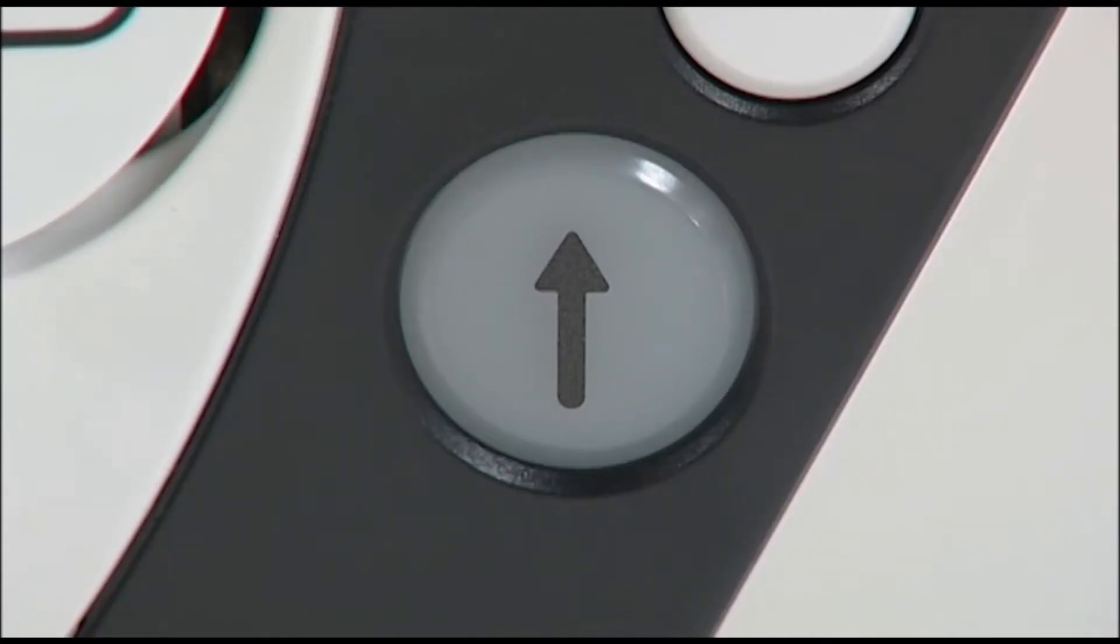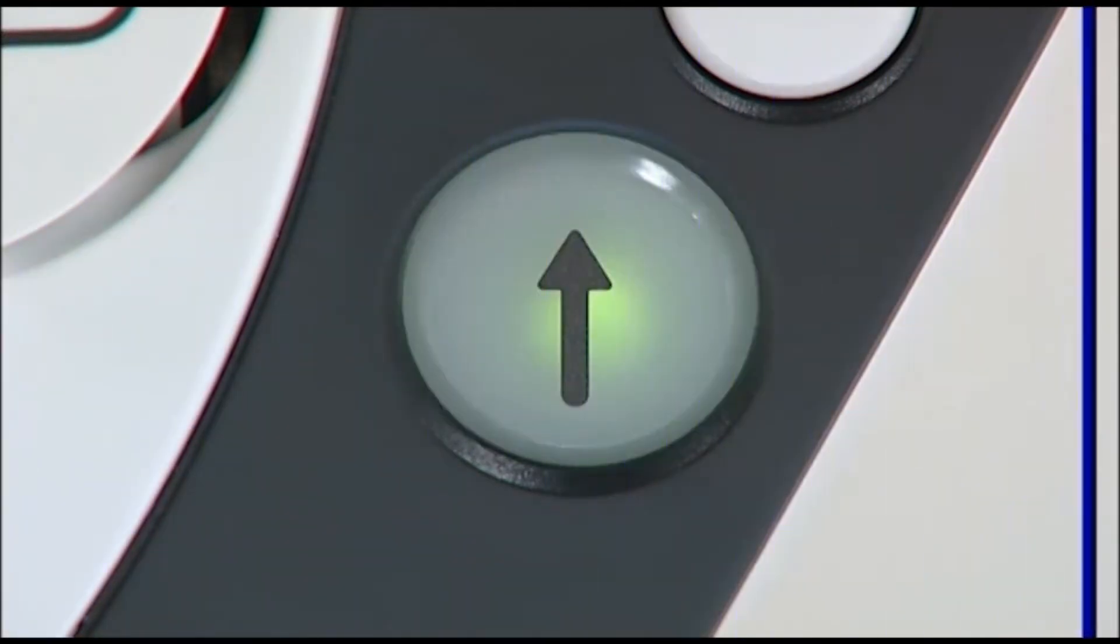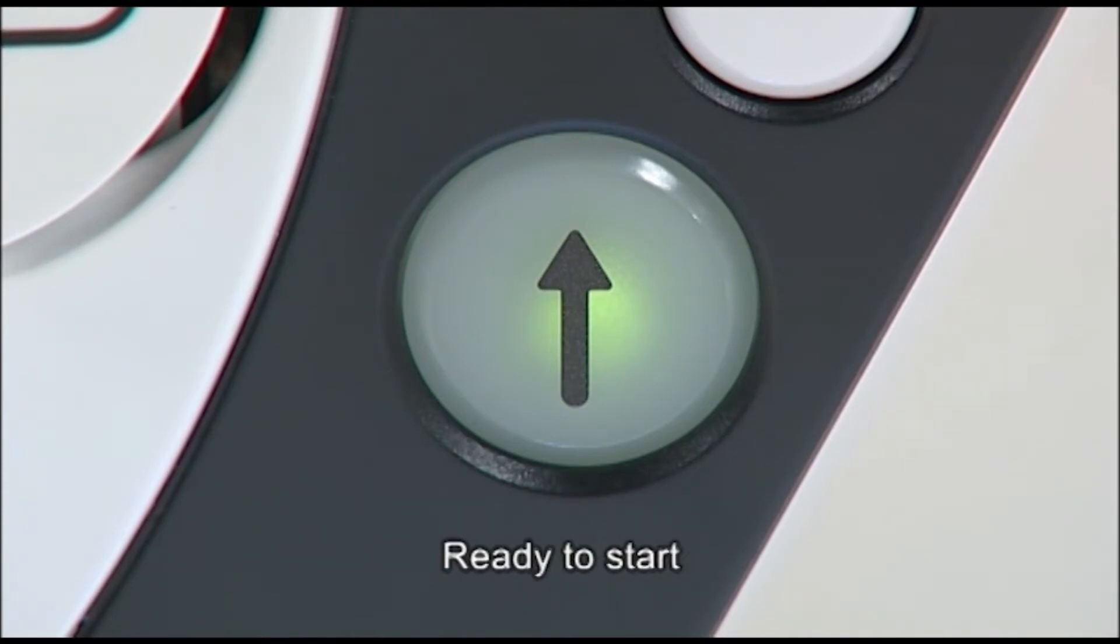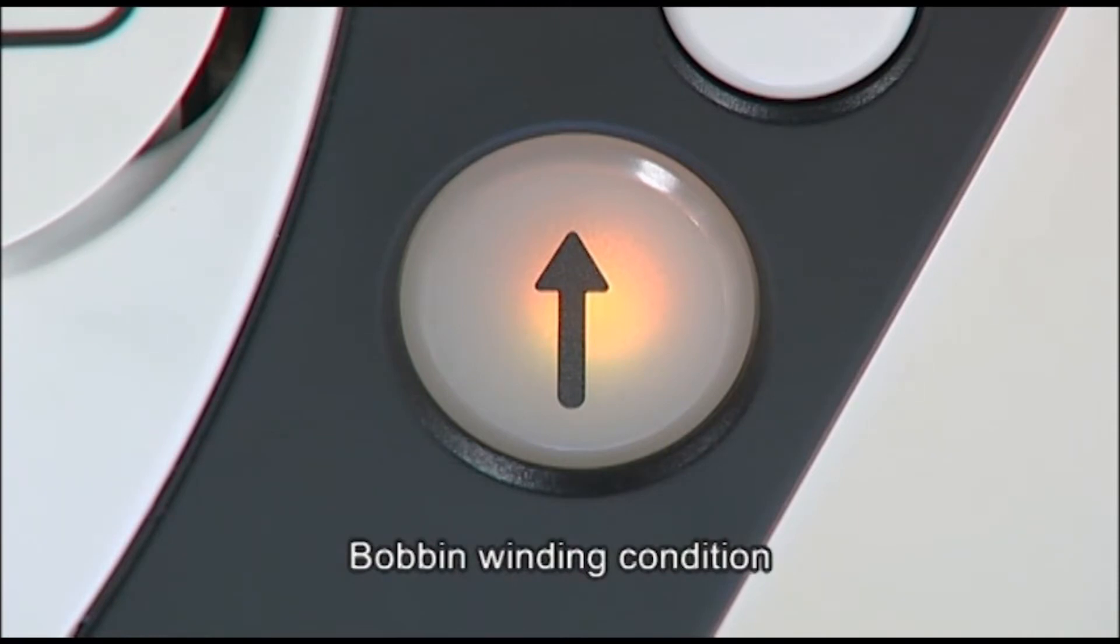The color of the start-stop button indicates the status of the machine. Green indicates that the machine is ready to sew or currently sewing. Red indicates that the machine is not ready to start. Orange indicates that the machine is in bobbin winding condition.